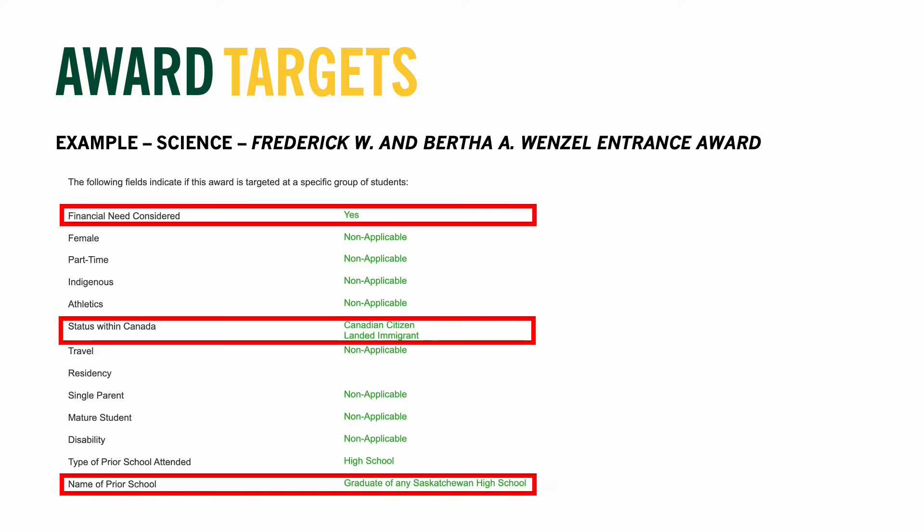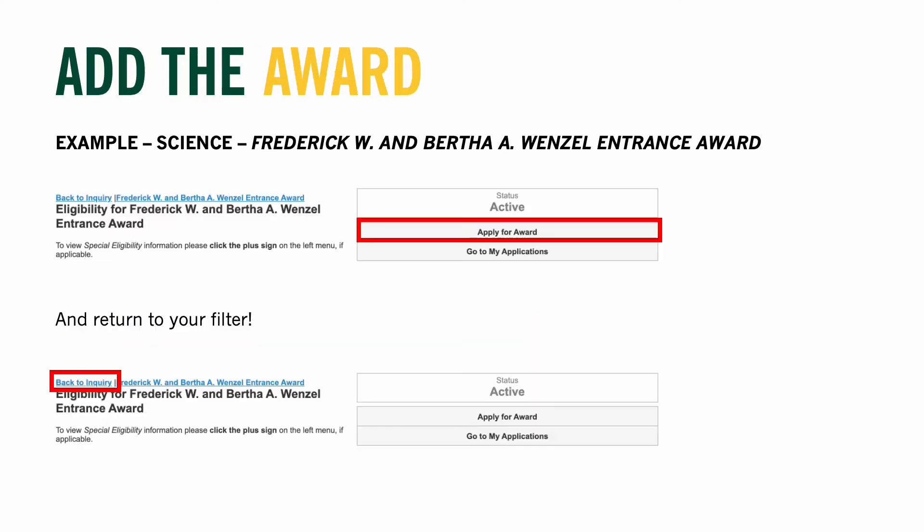Now review the section that details if the award is targeted towards a specific group. For this specific award, this list reminds us that you will need to state that you have financial need, your status within Canada, and the name of the high school you'll be graduating from. Once you have reviewed the award and decide that you qualify for it, you can select Apply for Award, and then select Back to Inquiry. Continue to review the other awards in your filter.